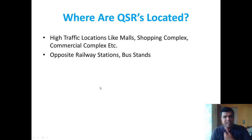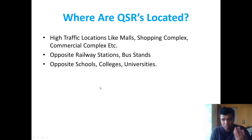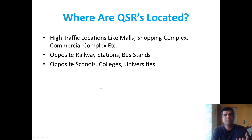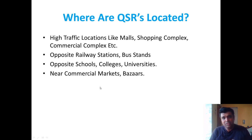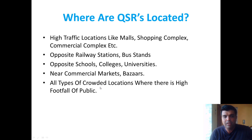Another good location is opposite railway stations and bus stands — places where a lot of population is constantly coming in and going out. QSRs also thrive opposite schools, colleges, and universities because of the large hungry crowd. It is said that if you put your product in front of a hungry crowd and it is priced right, it will fly off like hot cakes. Near commercial markets or bazaars also works well, as people moving around to shop tend to get hungry at mealtime.